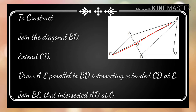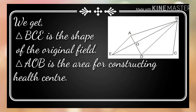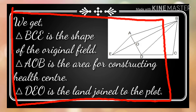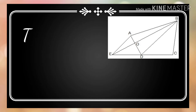First, we join BD to form a diagonal of ABCD. Then we extend CD and draw a line segment parallel to BD through A, which intersects the extended CD, forming a trapezium. From this construction: triangle BCE is the shape of the original field, triangle AOB is the area for constructing the health center, and triangle DAO is the land adjoining the plot.